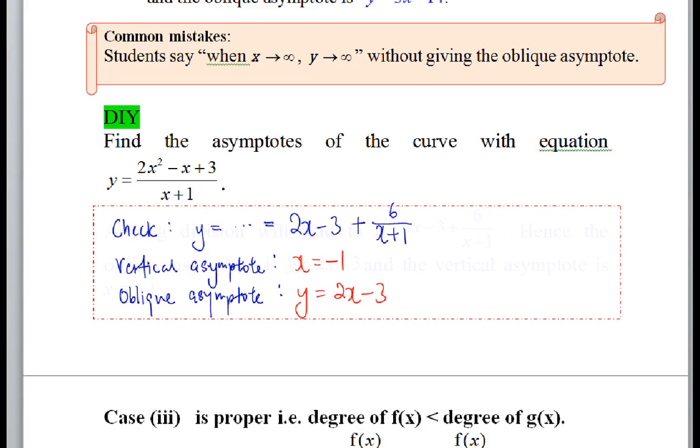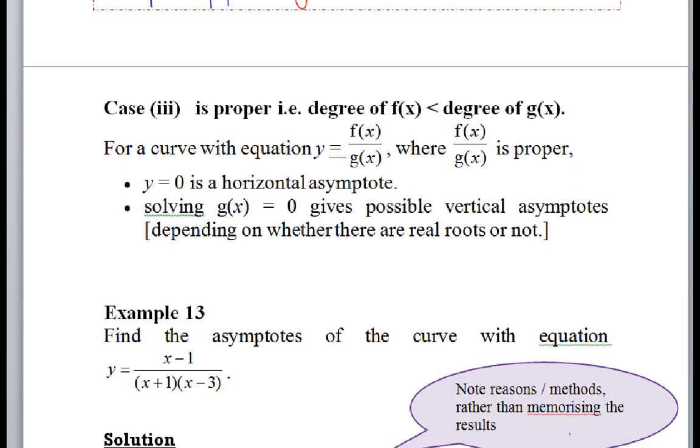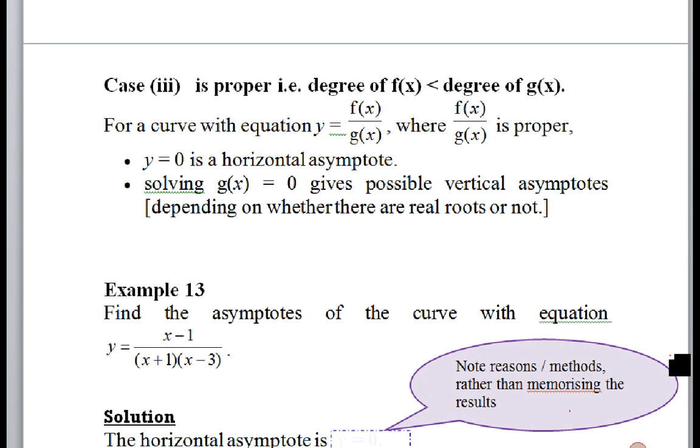Alright, case 3. We dealt with case 1 and 2. Case 3 is now when it is a proper fraction, a proper rational function. Let me focus our attention on an example here. Proper just means this—is it obvious to all of us that if it is a proper rational function, then y equals 0 is a horizontal asymptote?